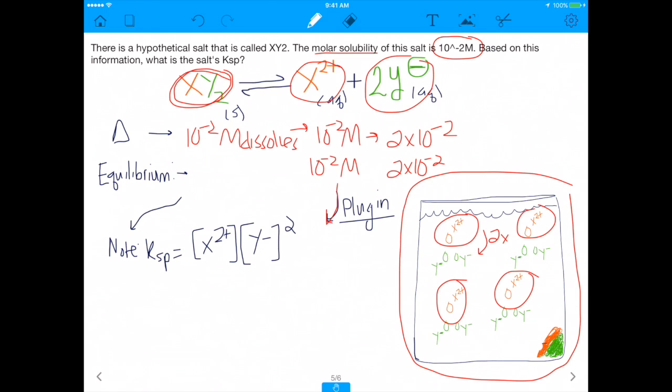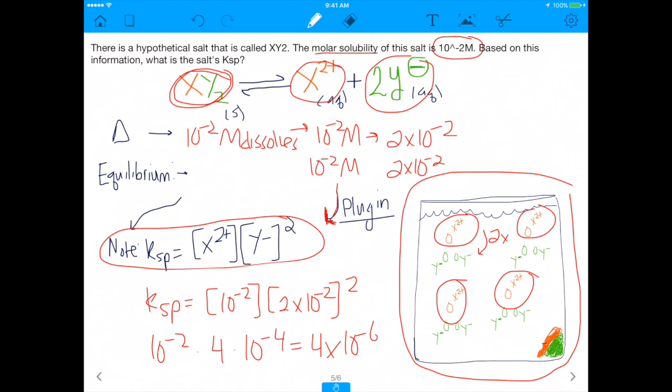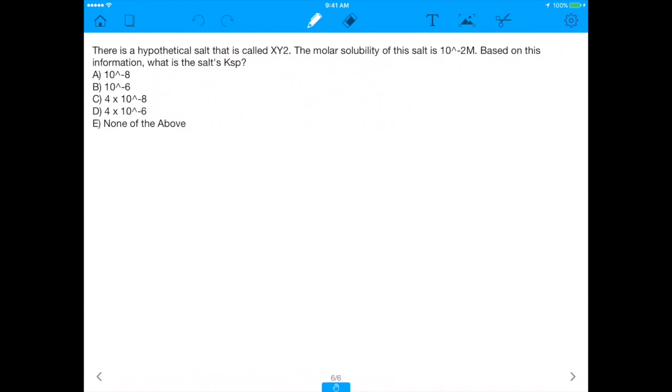And what you're now going to do is, because these are your concentrations at equilibrium, you can now plug them into our equation, right? Ksp is equal to 10 to the negative 2 times 2 times 10 to the negative 2 squared. And I know there's no calculator allowed on the MCAT, and therefore you should be able to do these exponents in your head. 10 to the negative 2 times 4 times 10 to the negative 4 gives you 4 times 10 to the negative 6. And if you turn the page, you will see that that matches answer choice D. That is the best answer.